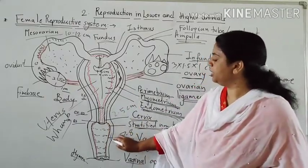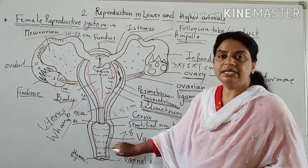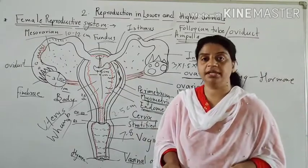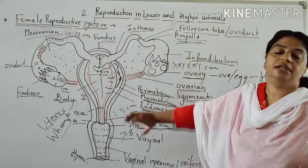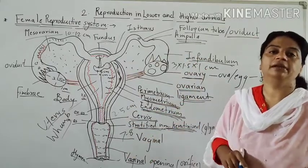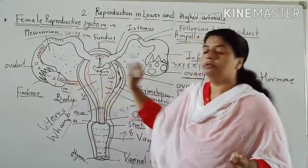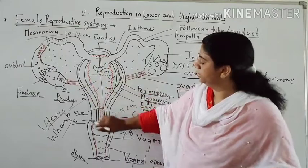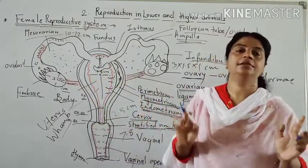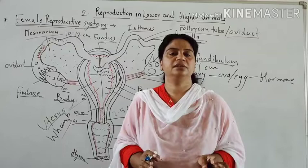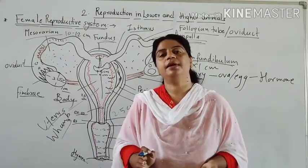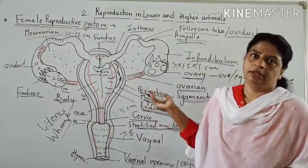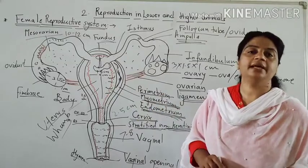This is the female reproductive system. The vagina is externally made up of smooth muscles and internally lined by stratified non-keratinized mucosal epithelium. These are the four internal organs of the female reproductive system: paired ovaries, paired oviducts, single uterus or womb, and vagina. A detailed description of the female reproductive system is asked for 4 marks in exams, and a diagram is also required.